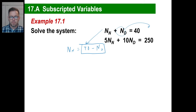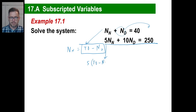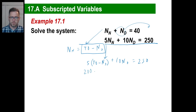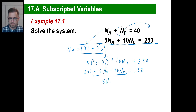So let's stick it right here. Instead of writing this equation with n sub n, we'll write this in its place. That's going to be 5 times n sub n, which is (40 minus n sub d), plus 10 n sub d equals 250. Distribute: 5 times 40 is 200, minus 5 times n sub d, plus 10 times n sub d. Negative 5 plus 10 is 5 n sub d. Moving 200 over: 250 minus 200 is 50. So n sub d equals 10.